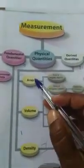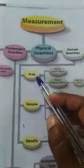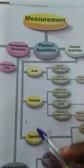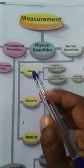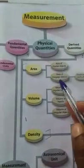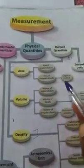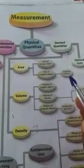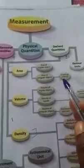We read in 7th standard area, volume, density. In area, area of regular objects, area of irregular objects, the irregular objects graphical method also. We know this.